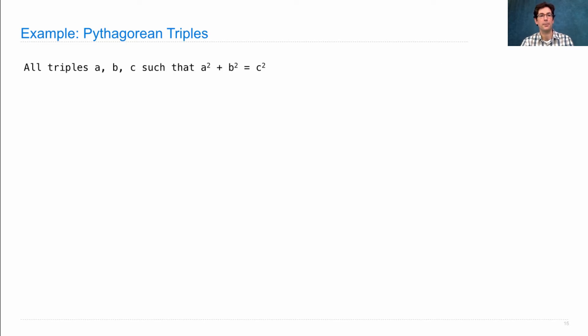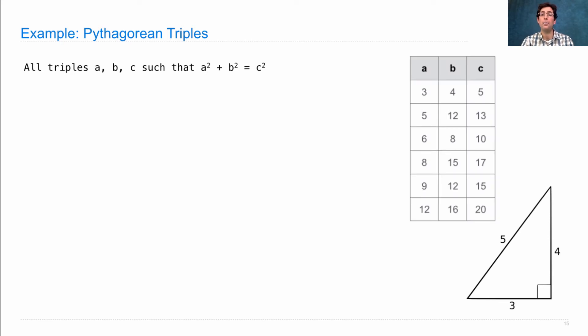Pythagorean triples. Pythagorean triples are triples of integers such that a squared plus b squared equals c squared. In a right triangle, they describe the relationship between the lengths of the legs and the length of the hypotenuse. And we could enumerate all the Pythagorean triples up to some maximum value.